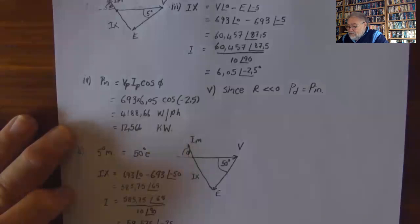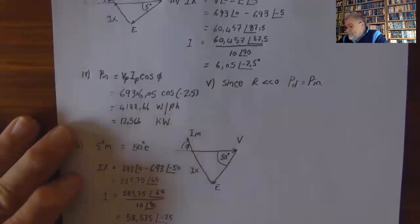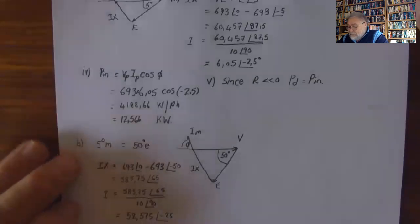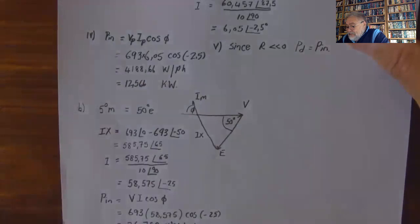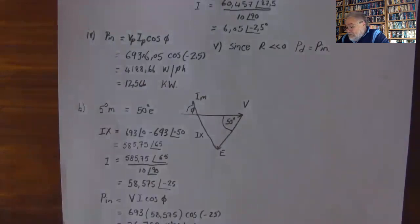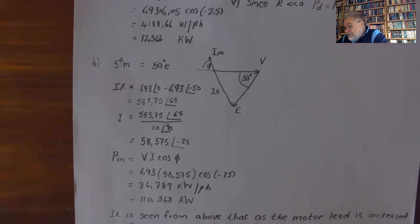The input is V_phase times I_phase times cos phi, which gives us 4188.66 watts per phase; the total is 12.566 kilowatts. Since R is negligible, the developed power equals the input power. For part B, if delta is now 5 degrees mechanical, that means it will be 50 degrees electrical. Therefore I X_s will be 693 angle 0 minus 693 angle minus 50, which gives a value of 558.575 angle minus 25.